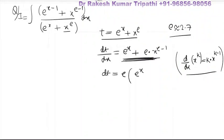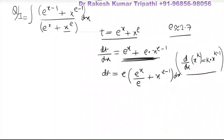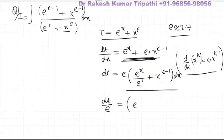After taking e as common, we get dt/e = e^(x-1) + x^(e-1) dx. Using the law of indices, e^x divided by e (power 1) becomes e^(x-1), plus x^(e-1) dx. This matches the numerator of the original integral.